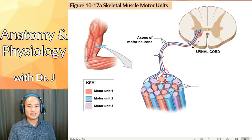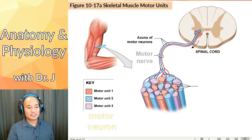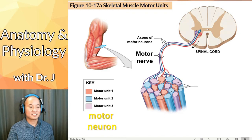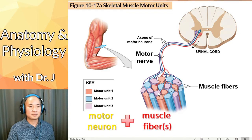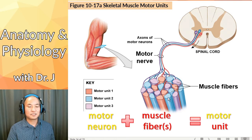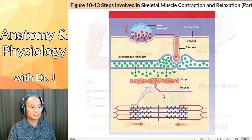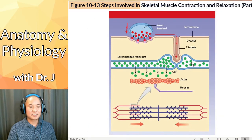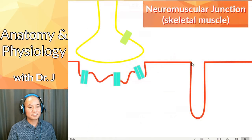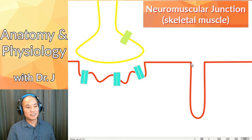We covered motor units last time. Motor neurons send signals to muscle fibers in skeletal muscle, and this makes up a motor unit. You have the neurons telling the muscle fibers to contract. We covered that neuromuscular junction — let's show that cartoon again.